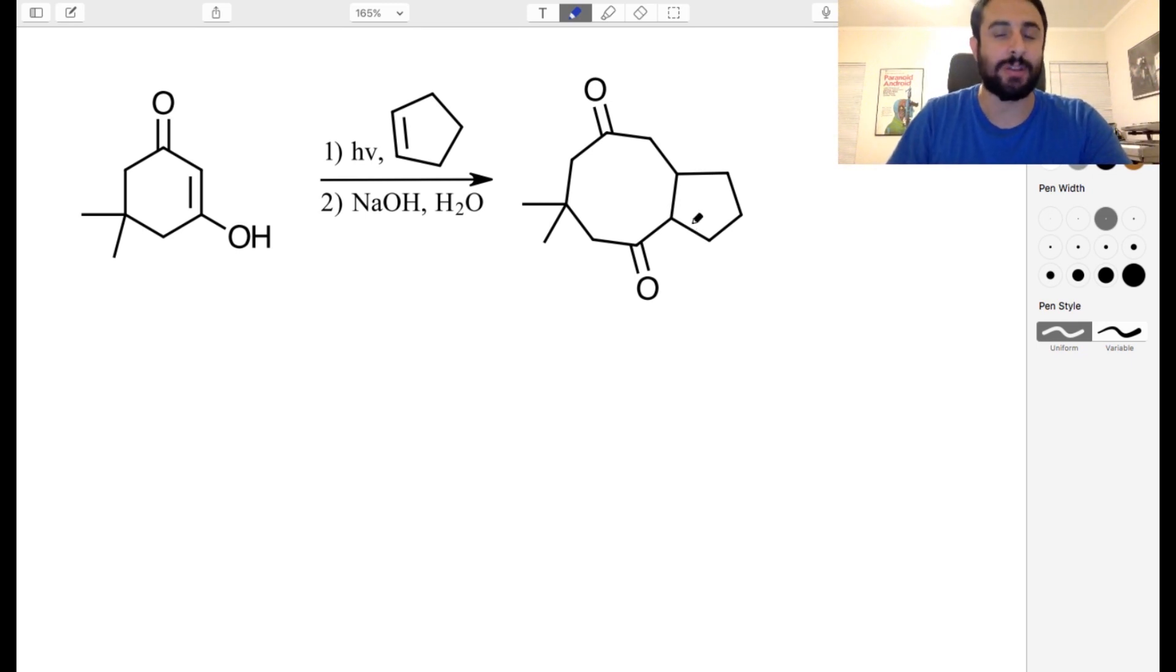We want the electron pushing arrows. We want to see exactly how this happens. So it's a bit interesting. We've got a six-membered ring going all the way to one, two, three, four, five, six, seven, eight-membered ring and a five-membered ring. So this is a very interesting one. Take a minute and see if you can figure it out.